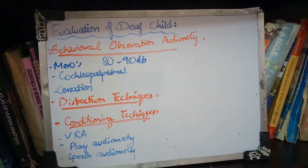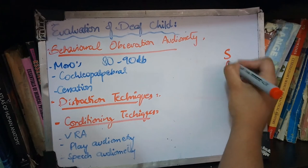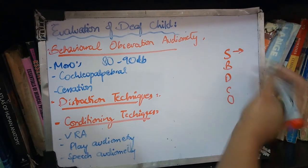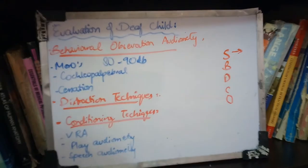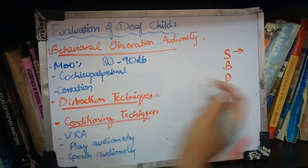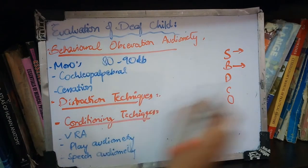Assalamualaikum. Okay guys, we were doing deaf child evaluation which is very important. The major 5 things to remember are sub-DCO, which covers screening procedures, auto-acoustic emissions, and auditory brainstem response, which is very important. Then we have done behavioral observation and audiometry, which is BCO.